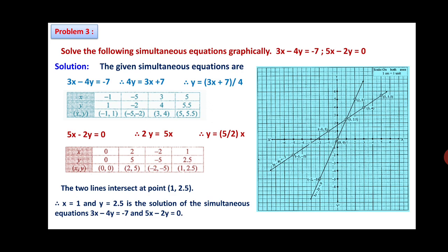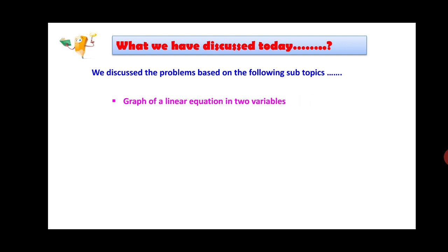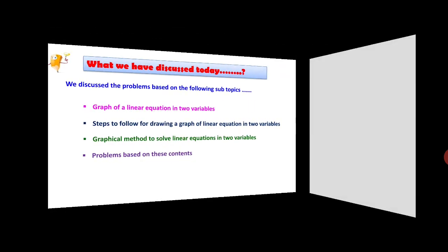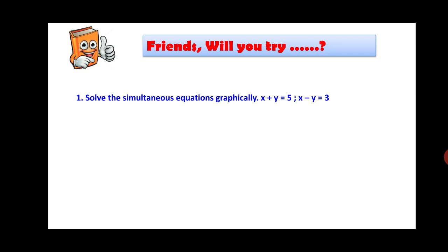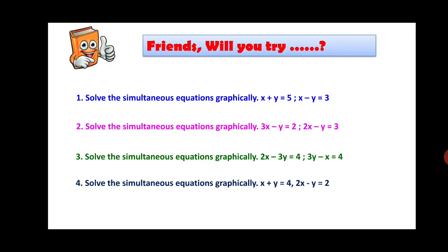Friends, we have discussed three problems, all very important. Practice similar problems at home. What we discussed today is the graphical method to solve linear equations in two variables, steps for drawing the graph, and problems based on this content. For home practice, solve the following simultaneous equations graphically: (1) x plus y equals 5 and x minus y equals 3; (2) 3x minus y equals 2 and 2x minus y equals 3; (3) 2x minus 3y equals 4 and 3y minus x equals 4; (4) x plus y equals 4 and 2x minus y equals 2.